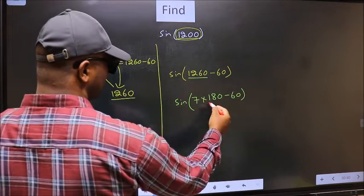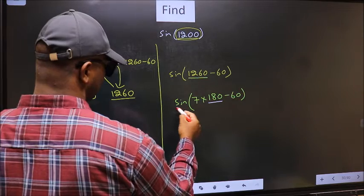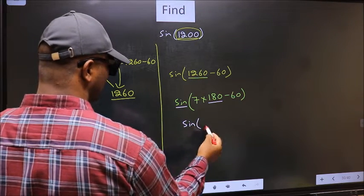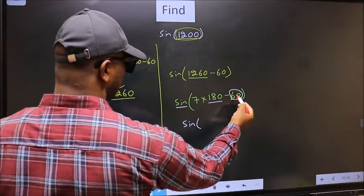Next, here we have 180°, so sin is not going to change. It will remain sin, and inside we get this angle.